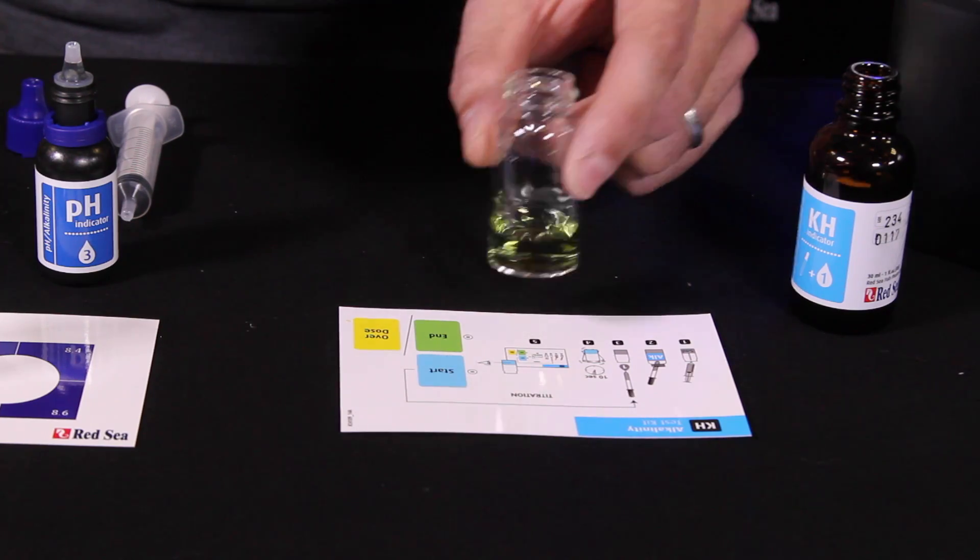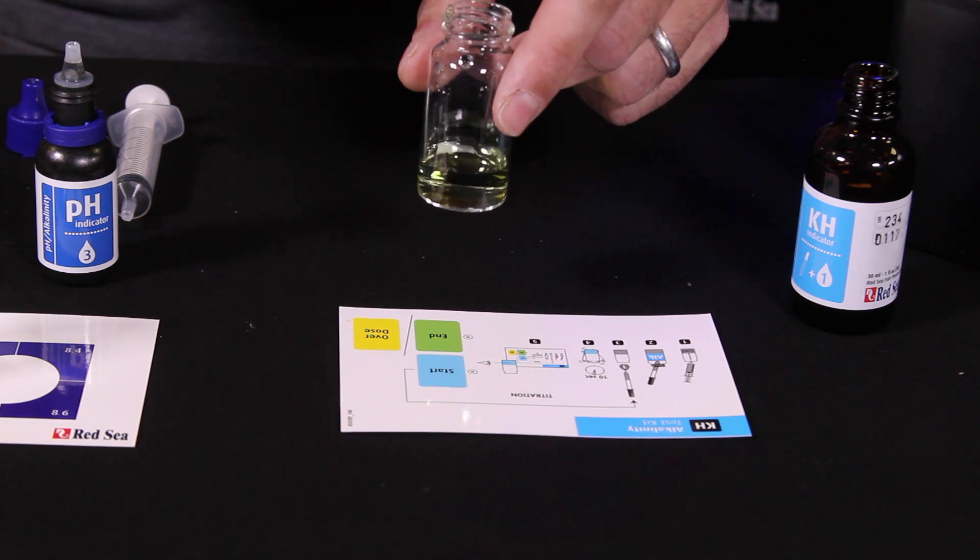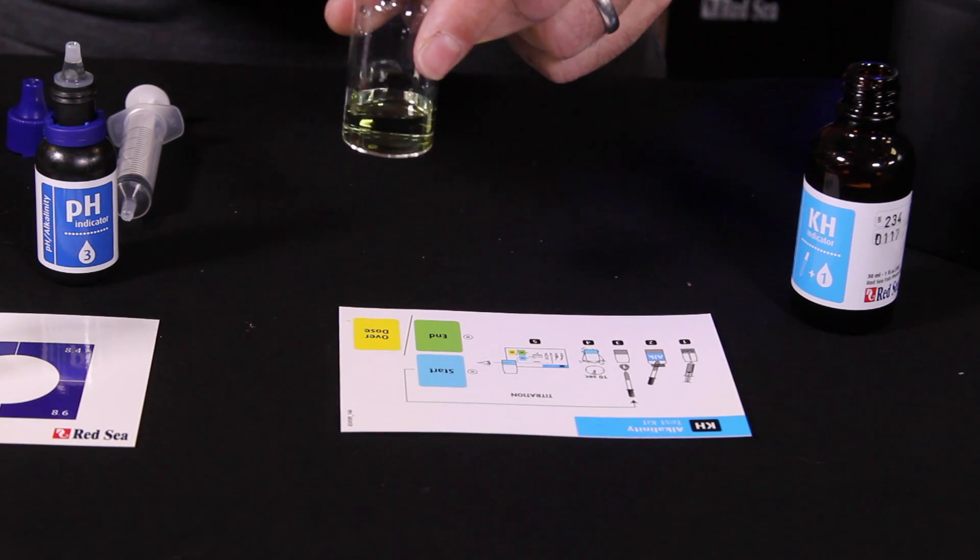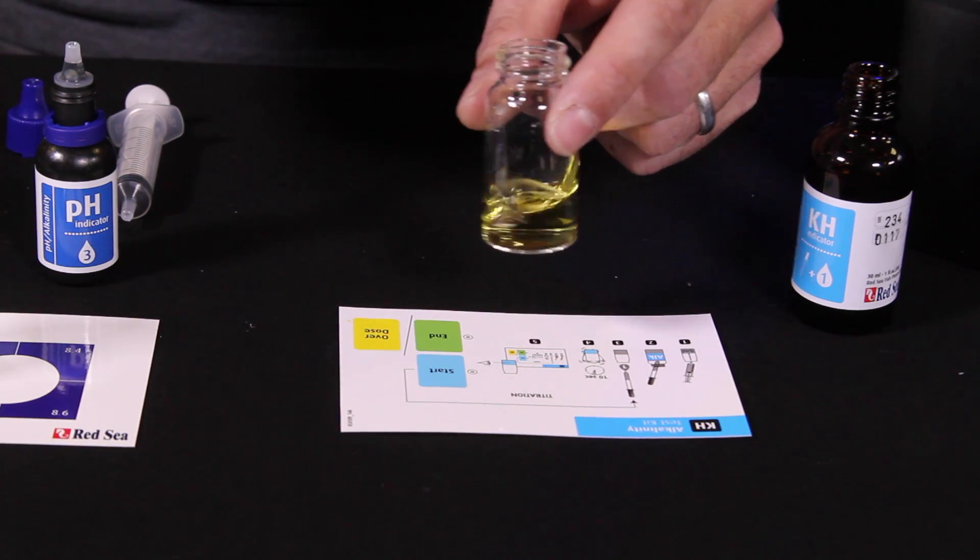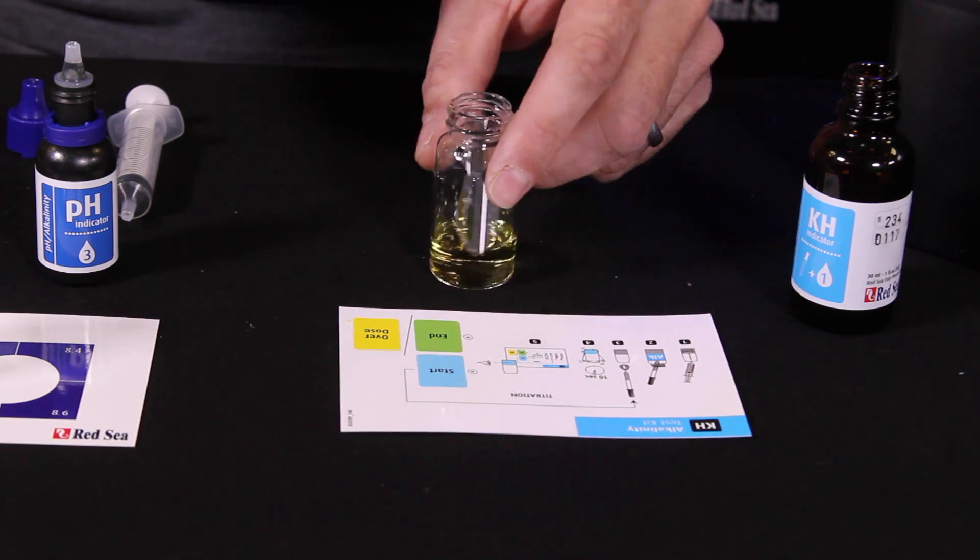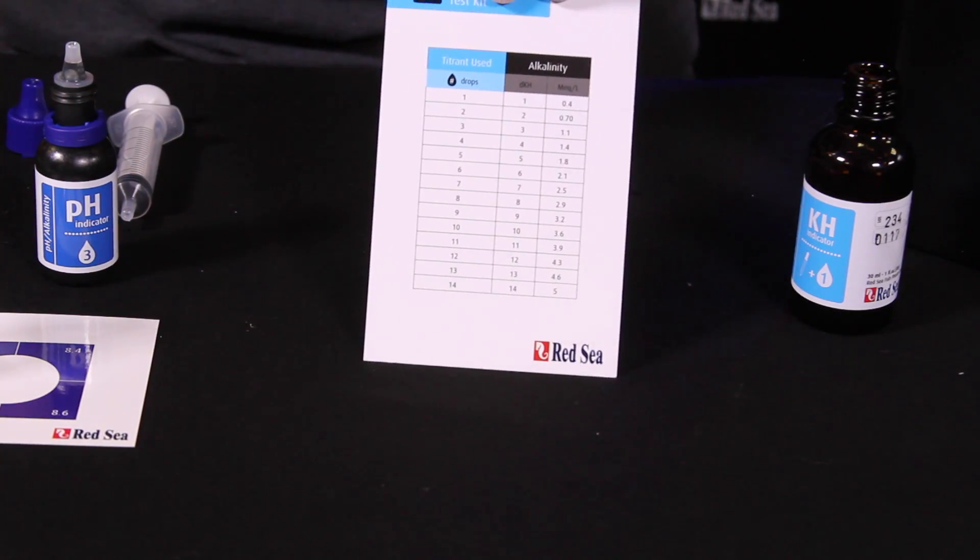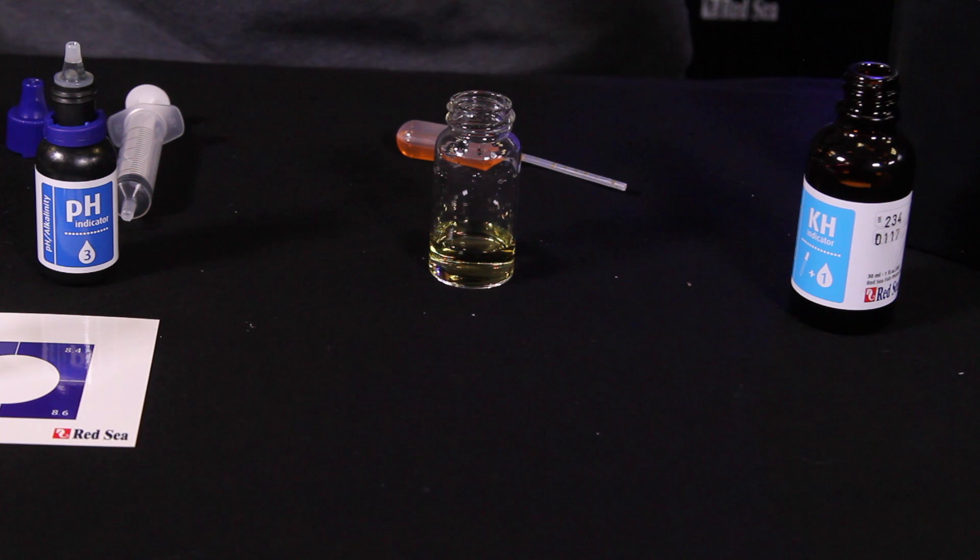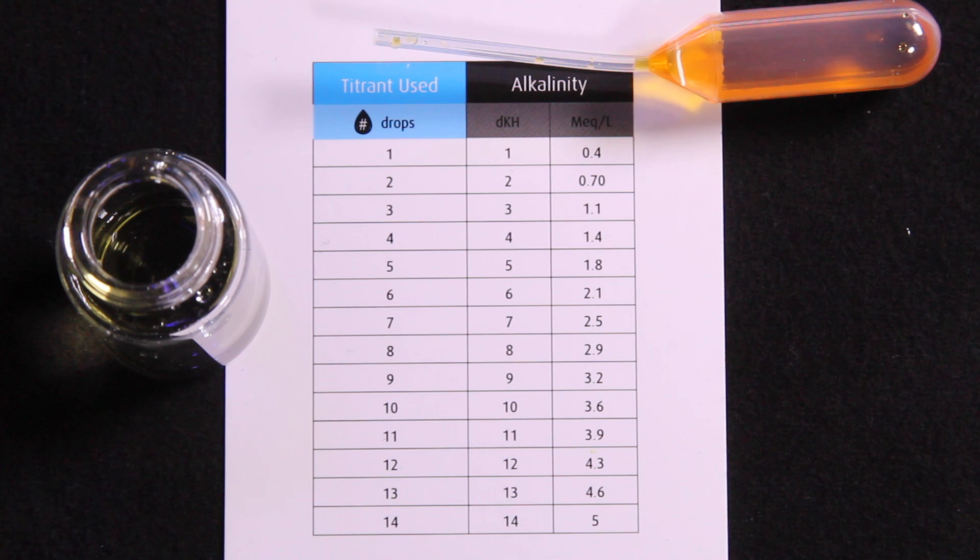Now if you overdo it, it's going to turn yellow. So now I see on the tenth drop it's definitely green. Let's see what happens with the eleventh drop. There it looks yellow. So we're going to go with ten drops. We'll compare that to our chart there. And we can see that with ten drops, our alkalinity has a dKH of ten. So a little high, higher than I prefer on alkalinity.